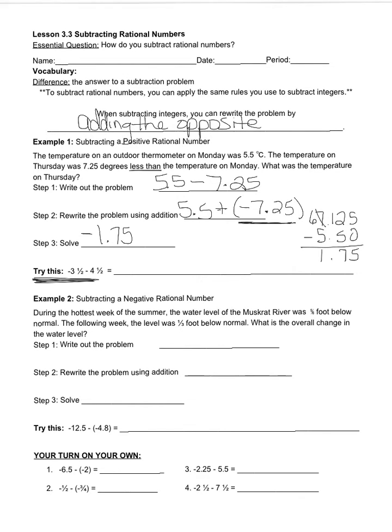Negative 3 and 1/2 minus 4 and 1/2. My first step here, I'm going to rewrite the problem. I know that my first number doesn't change. Now I'm going to add the opposite. The opposite of this 4 and 1/2 is a negative 4 and 1/2. My rewritten problem is negative 3 and 1/2 plus negative 4 and 1/2. Now, I have a half and a half and I know that a half and a half make a whole. So I have one whole plus 4 plus 3, so together I have a total of 8. Because I'm adding two rational numbers with the same sign, that same sign follows into my answer. My answer is negative 8.